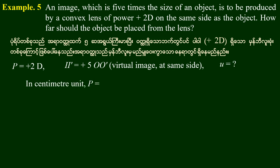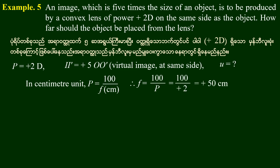First of all, the focal length. F is equal to 100 divided by power, that is equal to 100 divided by plus 2, which is equal to plus 50 cm.